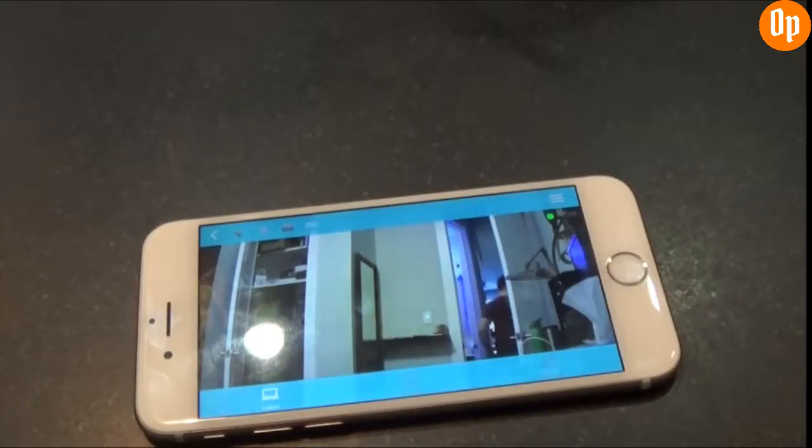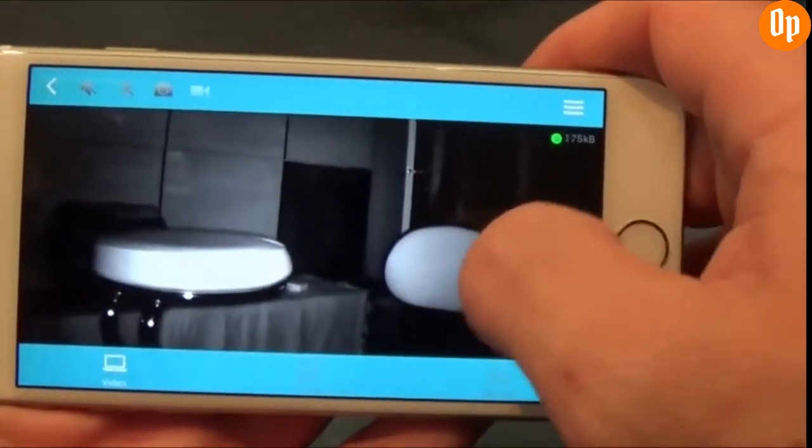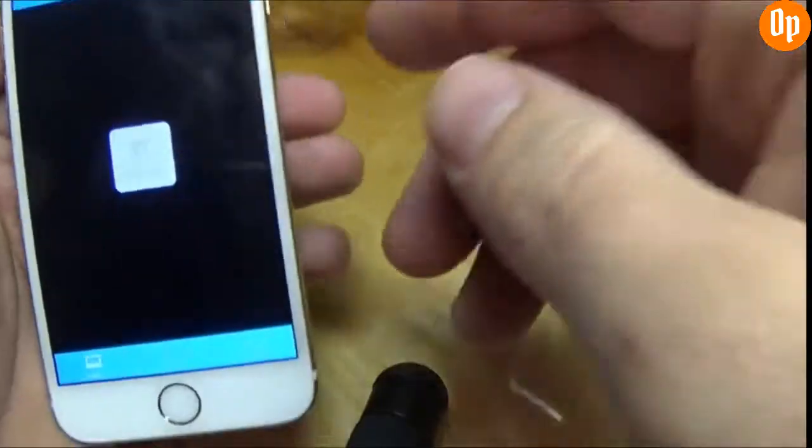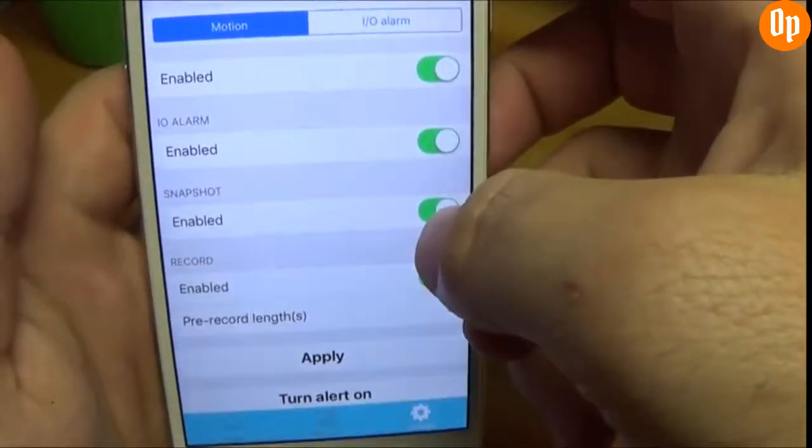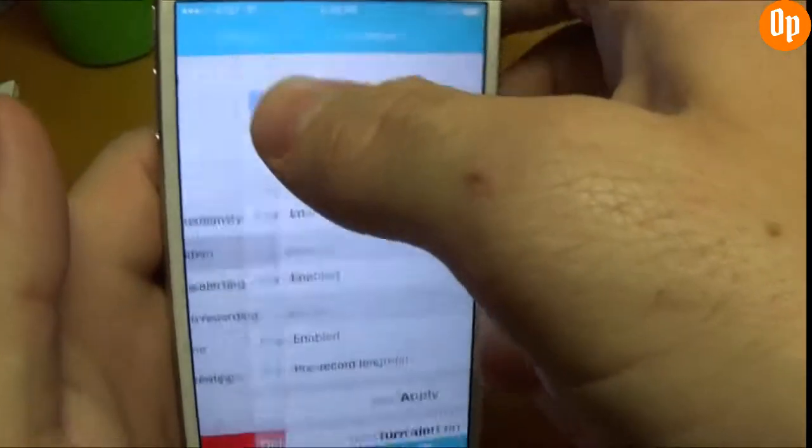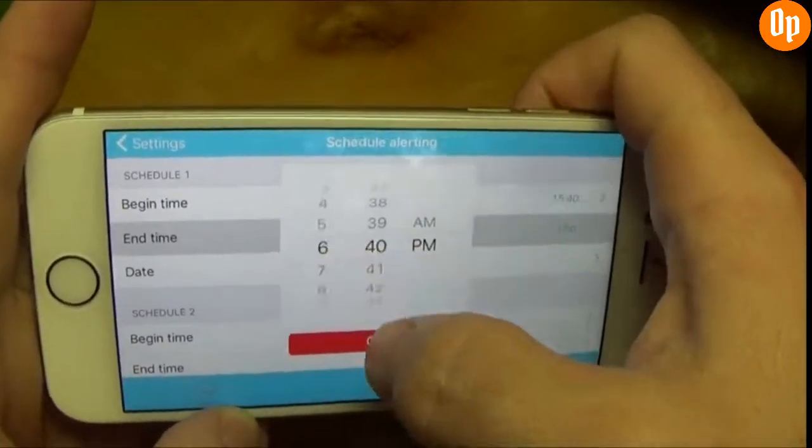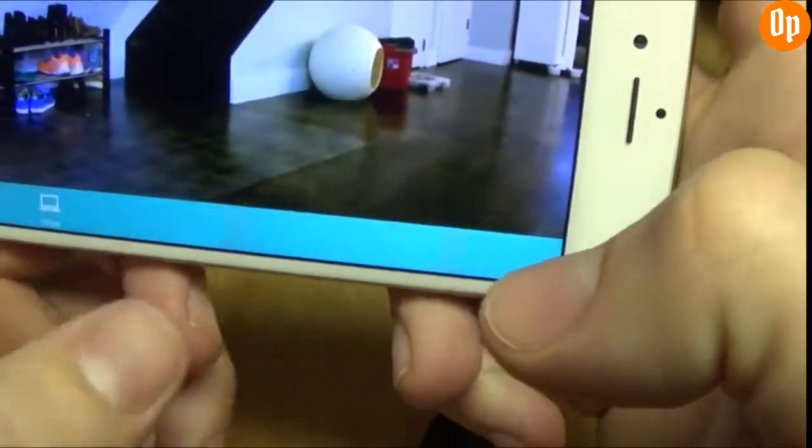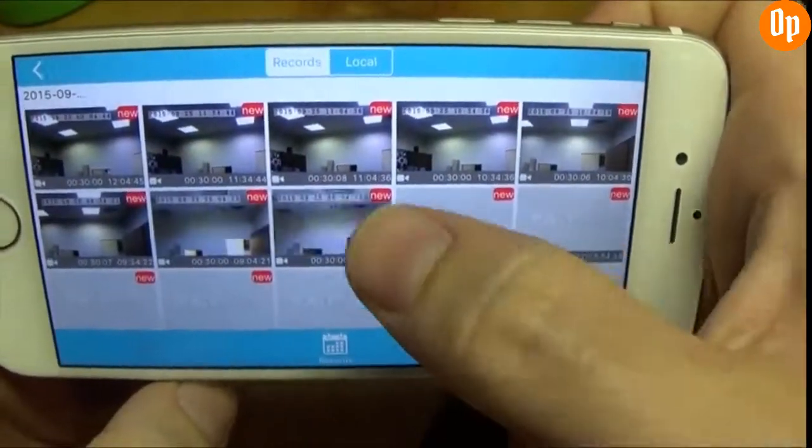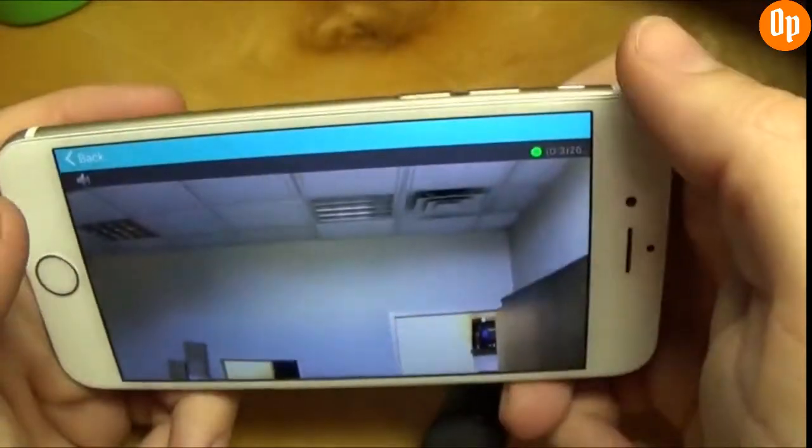The cameras produce crystal clear 720p HD video and work great even when the lights go out at nighttime. Set each of your cameras recording preferences separately to meet your needs. Enable motion detection to trigger a recording every time the camera detects activity. You can schedule recording or alerts to only trigger during hours you specify or set the camera to 24-hour mode and just let it roll. Recordings are saved to the SD card slot and your files are always up to date because the oldest files are overwritten to make room for the newest activity.